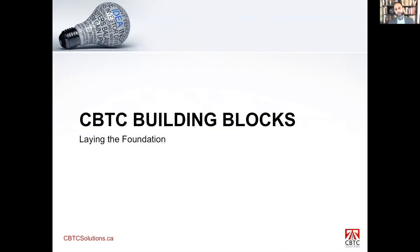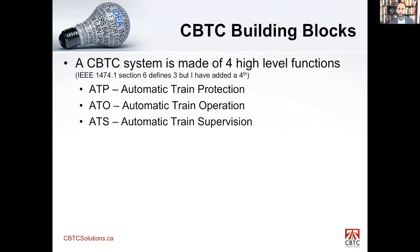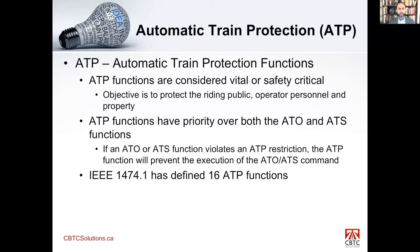So, CBTC building blocks — now we're going into what makes up a CBTC solution itself. There are three high-level functions: ATP, ATO, and ATS — Automatic Train Protection, Automatic Train Operation, and Automatic Train Supervision. These three building blocks define a CBTC system itself.